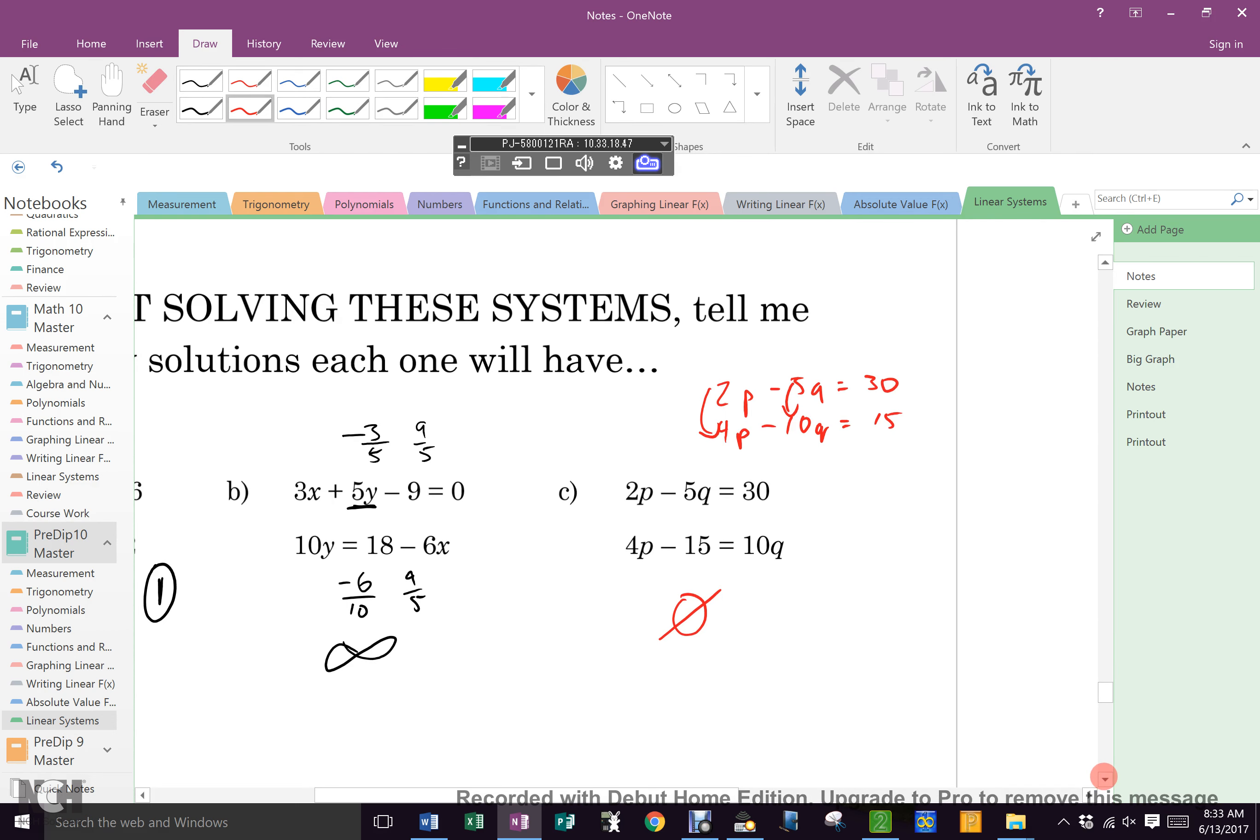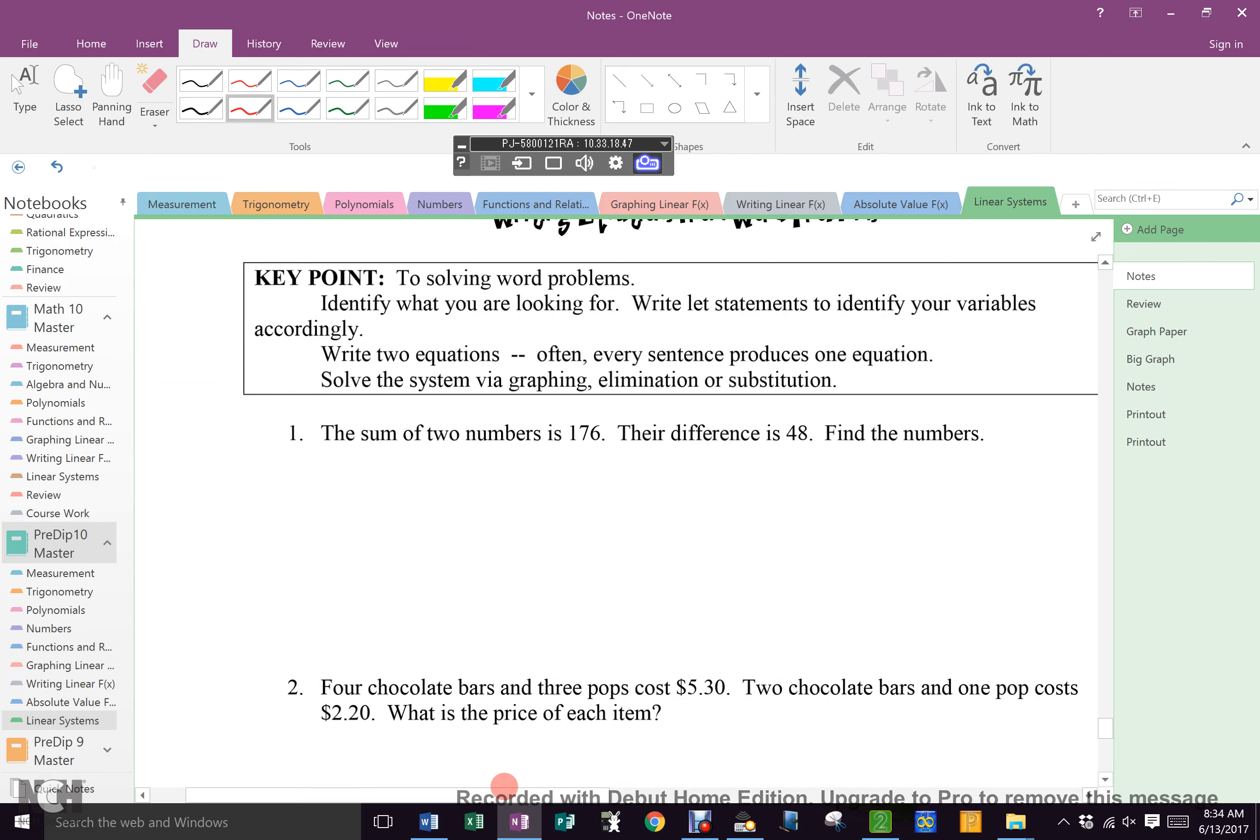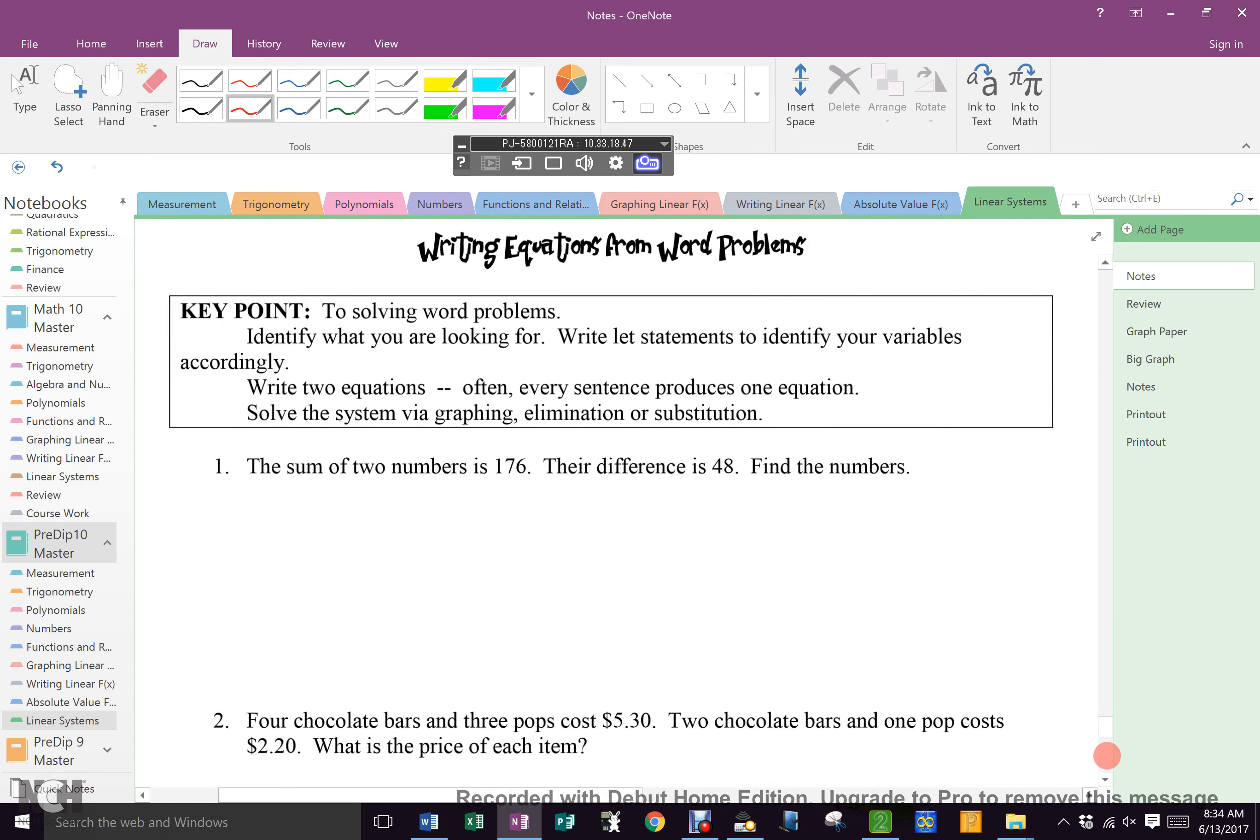Is everybody good with properties of systems? Okay. Turn the page over. Last thing. Last thing in all of grade 10. Word problems. Everybody says they can't do word problems. Every single person says they can't do word problems. Doesn't matter how good you are in math. They can't do word problems. Every single one of you. Right? When you read a word problem, do you know the answer? No, of course not. Because then it wouldn't be a word problem, would it? Right? So if I told you the numbers are 18 and 27. Is that a word problem? No, that's a solution. So we need to think about what it is we are looking for. Read this question to me. Sum of two numbers, 176, their difference is 48. Find the numbers.